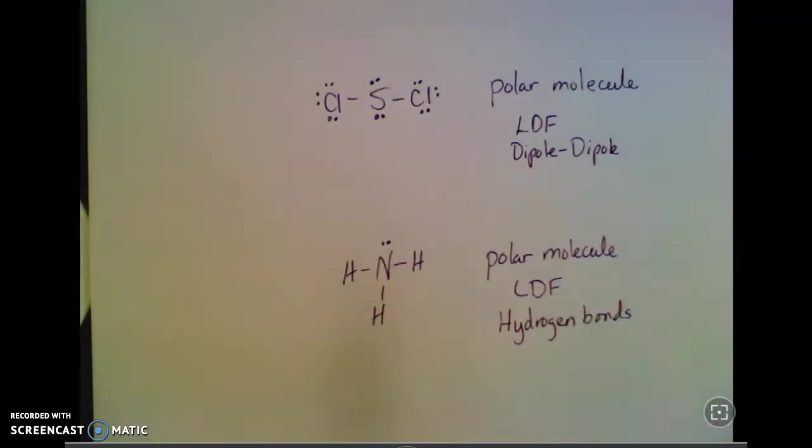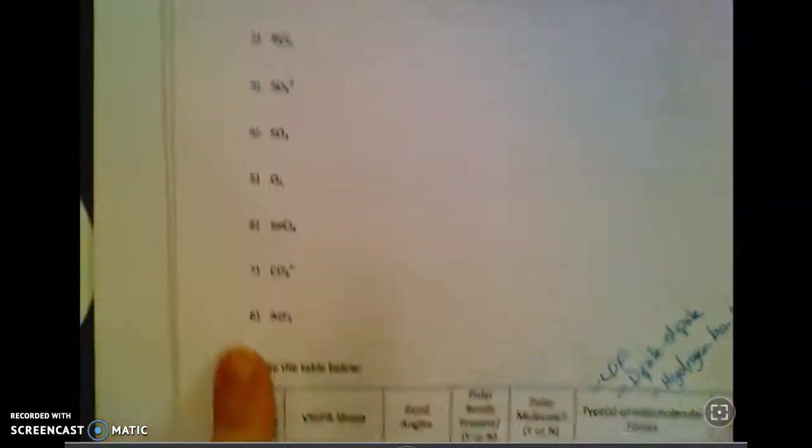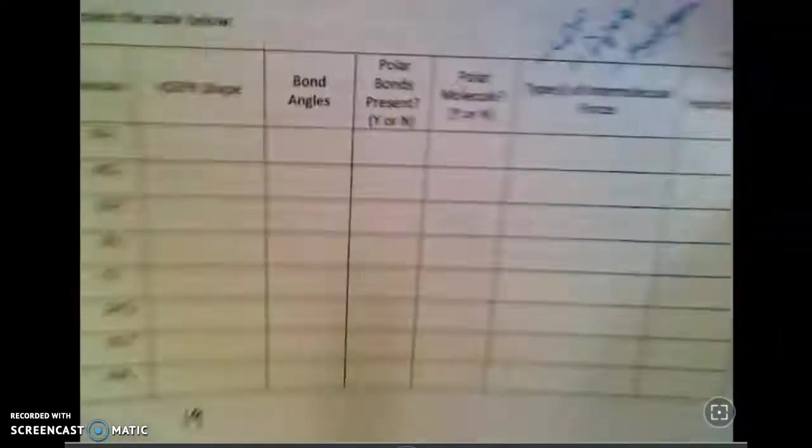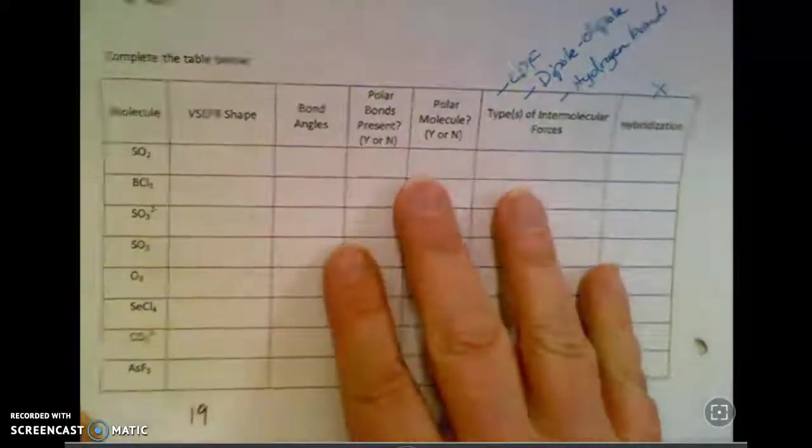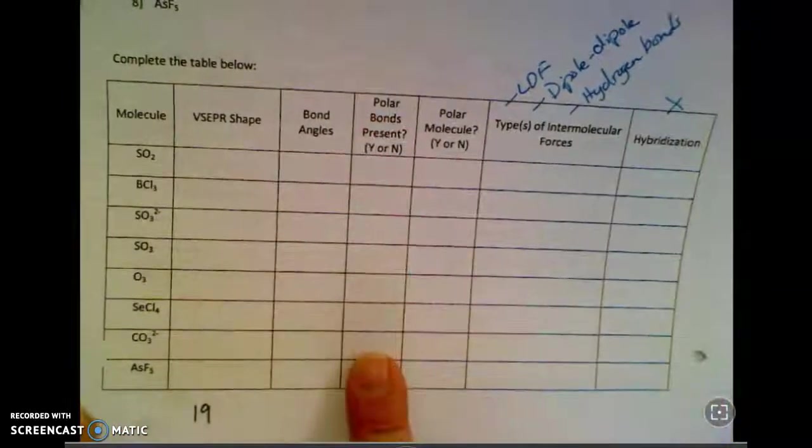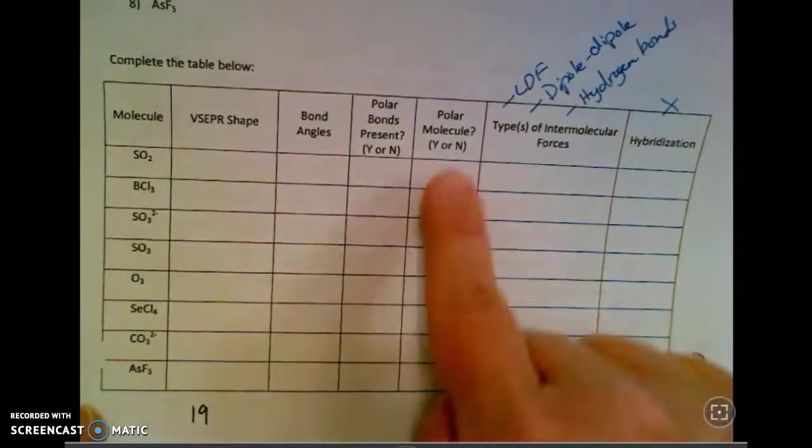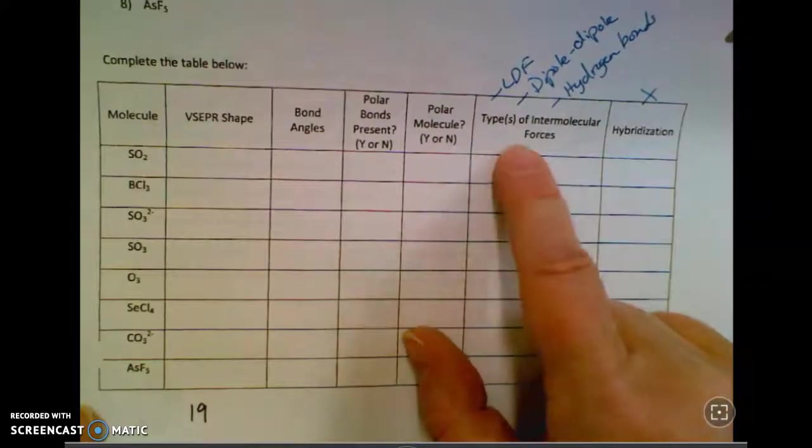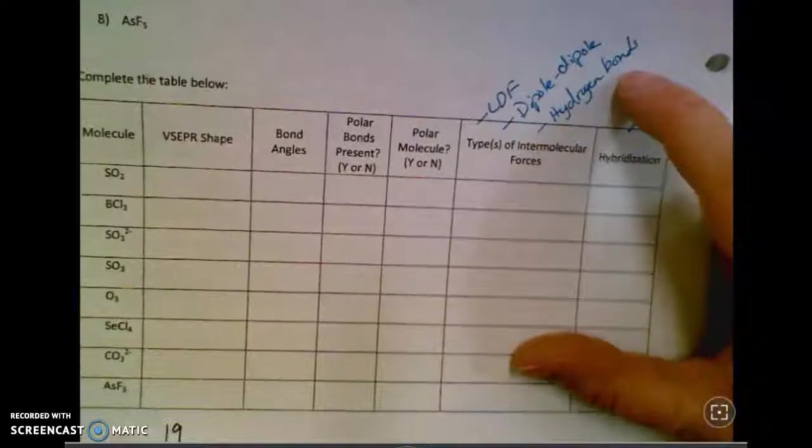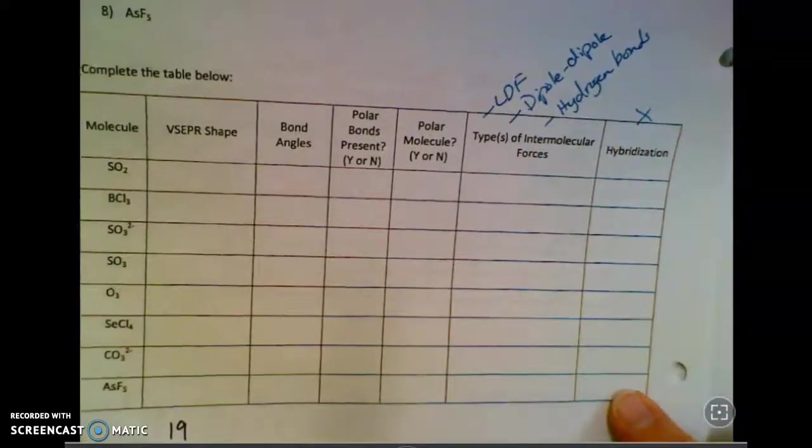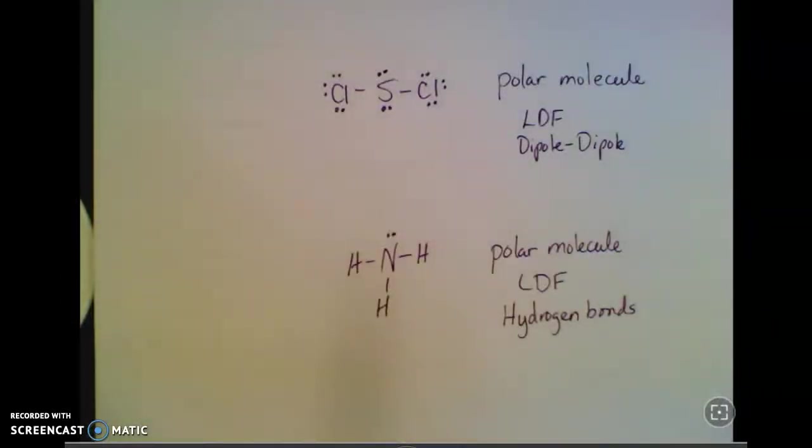On your homework assignment, you've got these molecules to draw. Again, this is page 19 in your packet. You're going to fill out the table with the shape, the bond angles, which you've done before. Do you have polar bonds? Is it a polar molecule? As you answer this question, that will give you the types of intermolecular forces: London dispersion, dipole-dipole, or hydrogen bonding. Don't worry about the hybridization category yet. We will work on that on Monday.